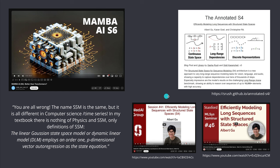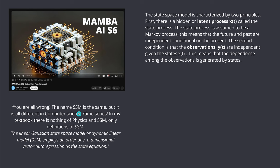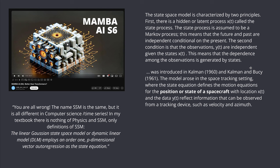Let's dive into this for a second. In this textbook, there is a definition that a state space model is characterized by two principles: a hidden latent process and we have an observation, and those observations are independent of the state. This enables us to have a physical interpretation and an interpretation in computer science or time series analysis. If you look in your textbook, in the introduction it says the state space model was introduced by Kalman and Bucy, 1960-61. The model arose in the space tracking setting, where the state equation defines the motion equation for the position of a spacecraft with a location x and some data y, reflecting information observable from a tracking device such as velocity and azimuth.